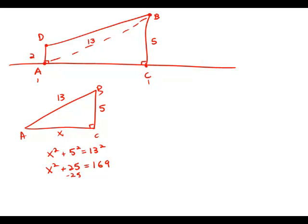Subtract 25 from both sides. We get X squared equals 144, and that means that X equals 12. So that's huge. Now we have that length 12.